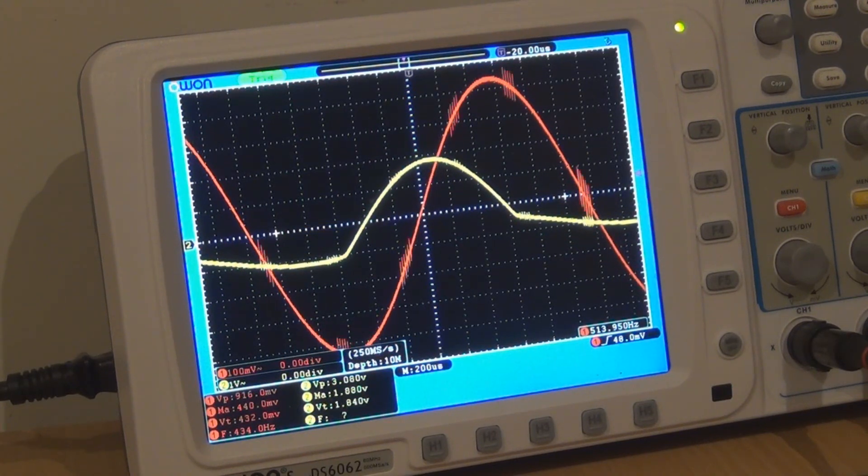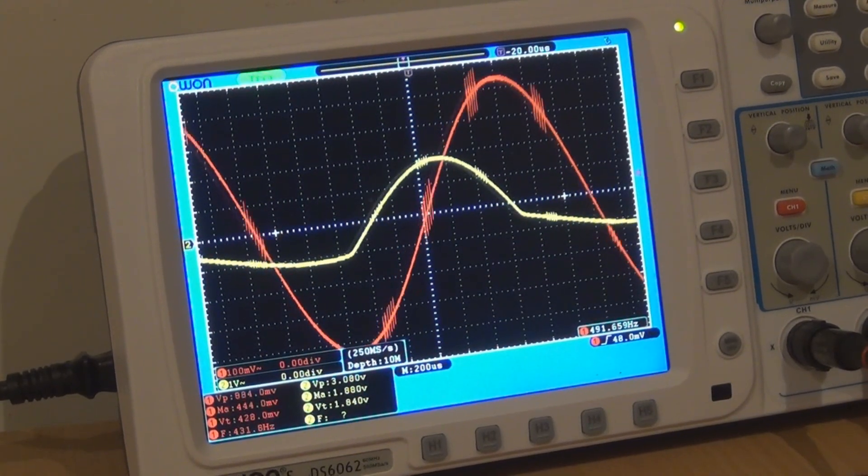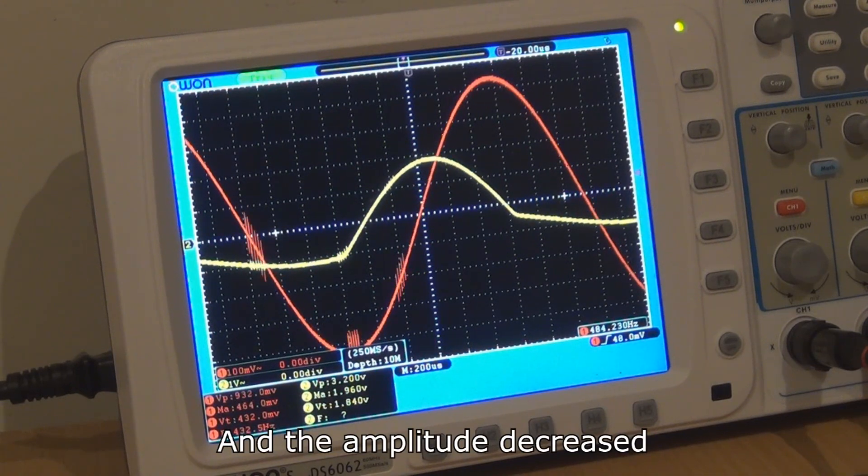That is two bat 41s which is 0.38 volts, which is quite low. And as you can see the signal just clipped as I changed it from LED to bat 41.